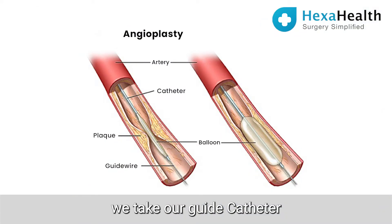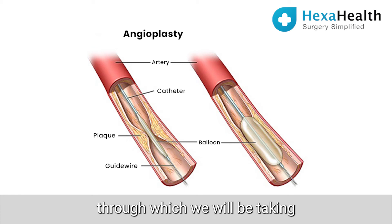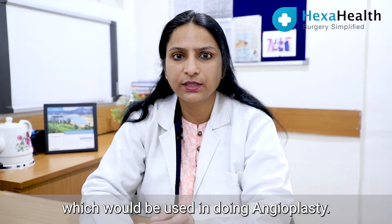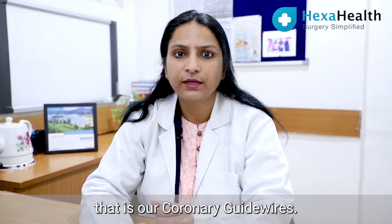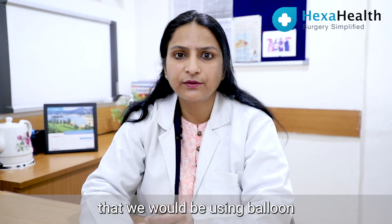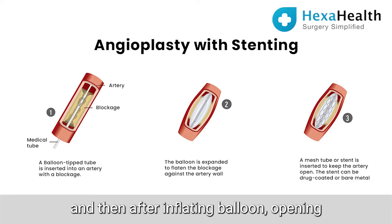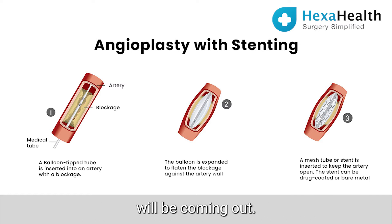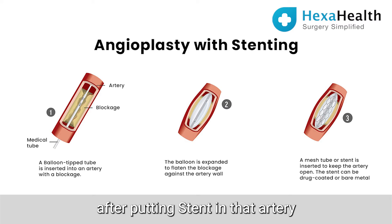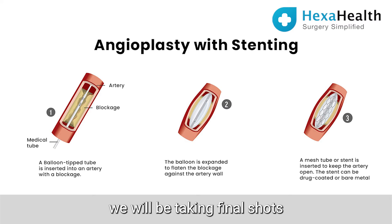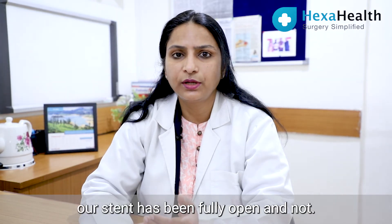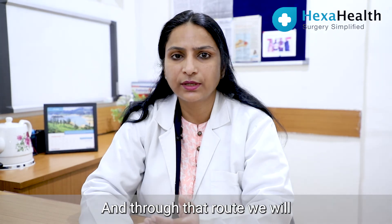Over that wire we advance our guide catheter, through which we deliver all the hardware used in angioplasty — coronary guide wires and then a balloon. After inflating the balloon to open the blockage, we place a stent in that artery. After putting the stent, we take final shots to confirm the stent has been fully opened.